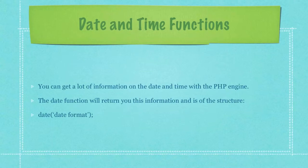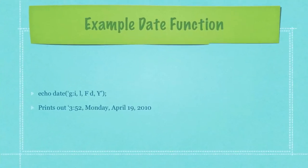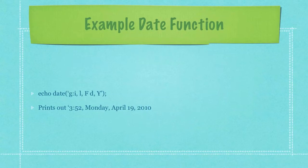You can get a lot of information on the date and time with the PHP engine. The date function is used to return you this information. Here are all the date codes available for you to use with the date function — pretty much everything you'd want in regards to date or time. Here is an example: if we echo what the date function returned based on the codes entered, it would print out that it is currently 3:52 on Monday, April 19, 2010 — which also just so happens to be my daughter's birthday.